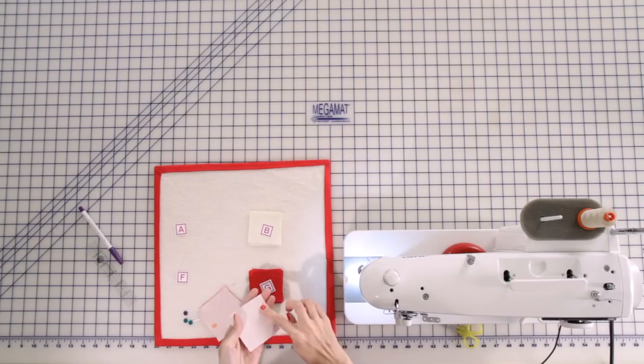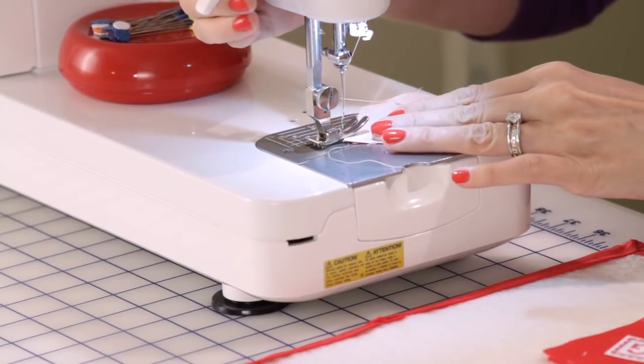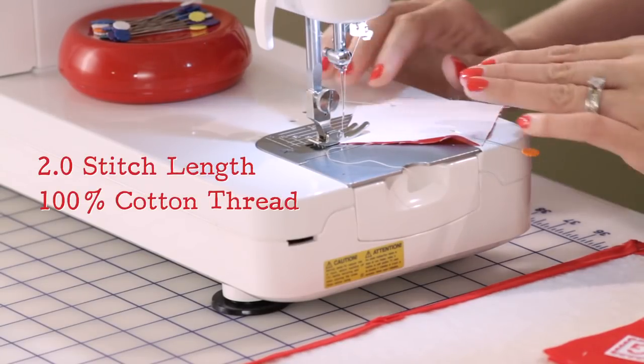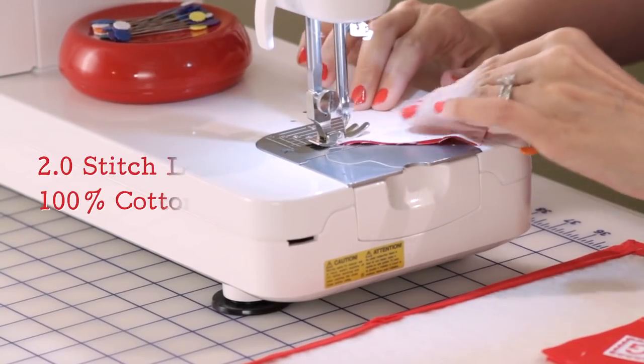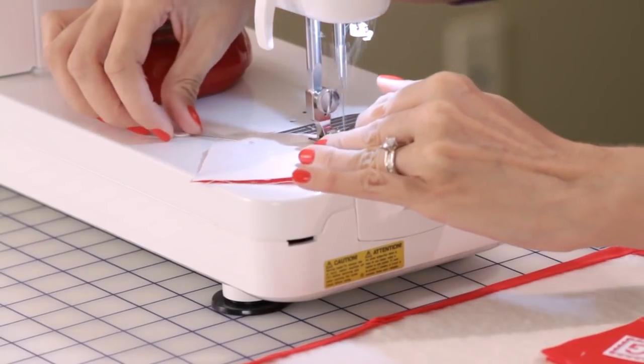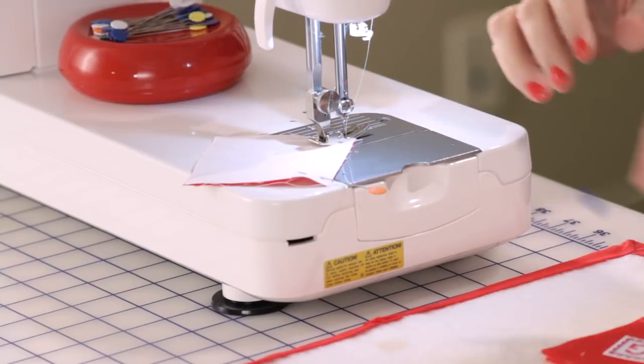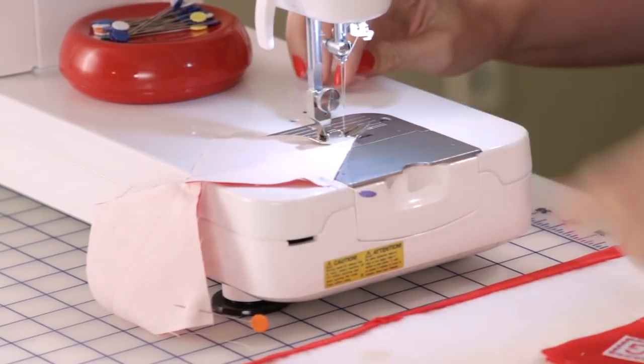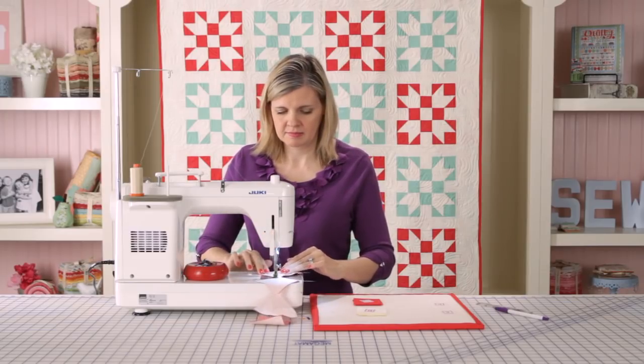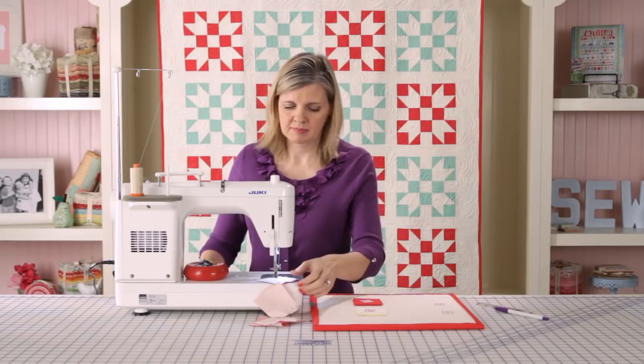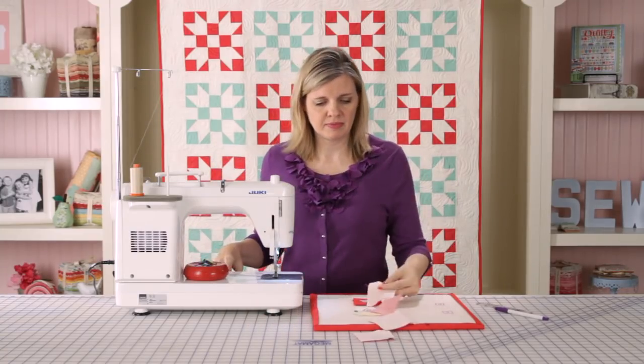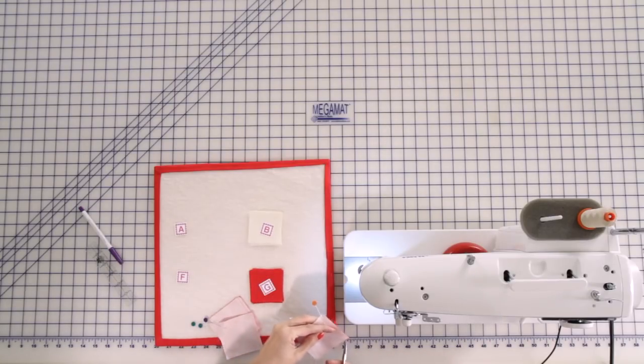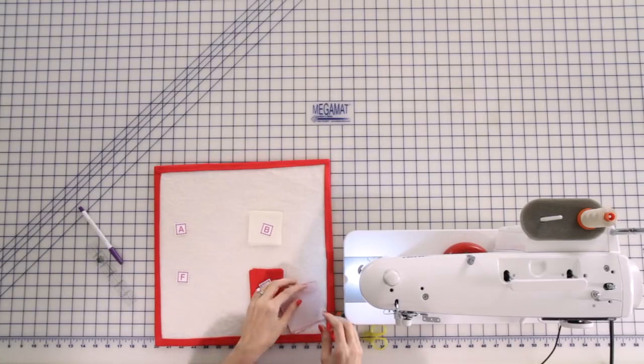Next, let's make our half square triangles by sewing on the line we just drew. I'm going to chain piece and I'm going to sew all of the same side together at one time. You want to use a 2.0 stitch length and 100% cotton. I'm going to just sew directly on the line and pull the pin on that side as you sew. You're just going to continue for all four. Now we've sewn all four together and we're just going to clip them apart. Doing this really saves time and thread by chain piecing these together. We'll just flip these apart and do the exact same thing on the other side.